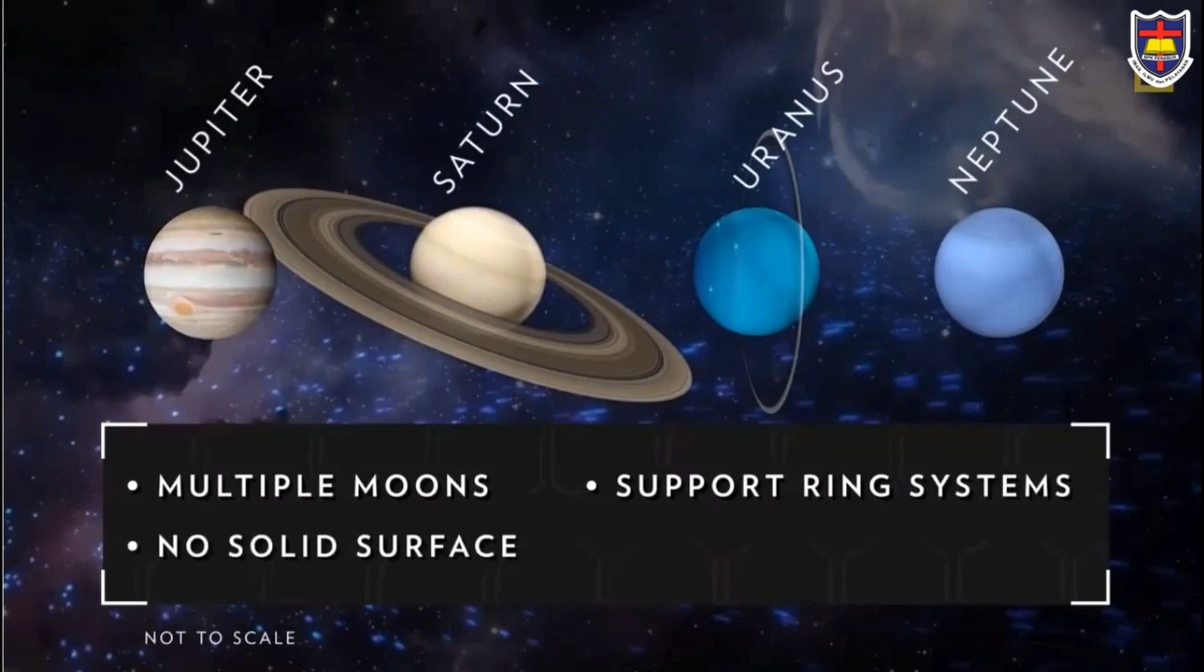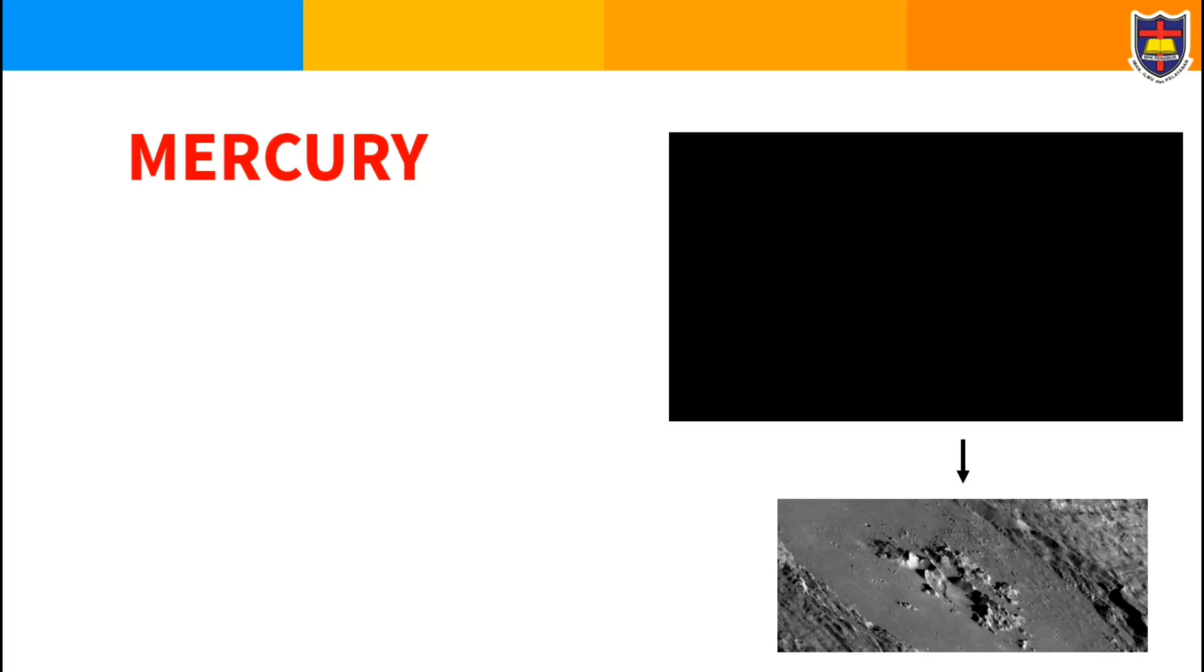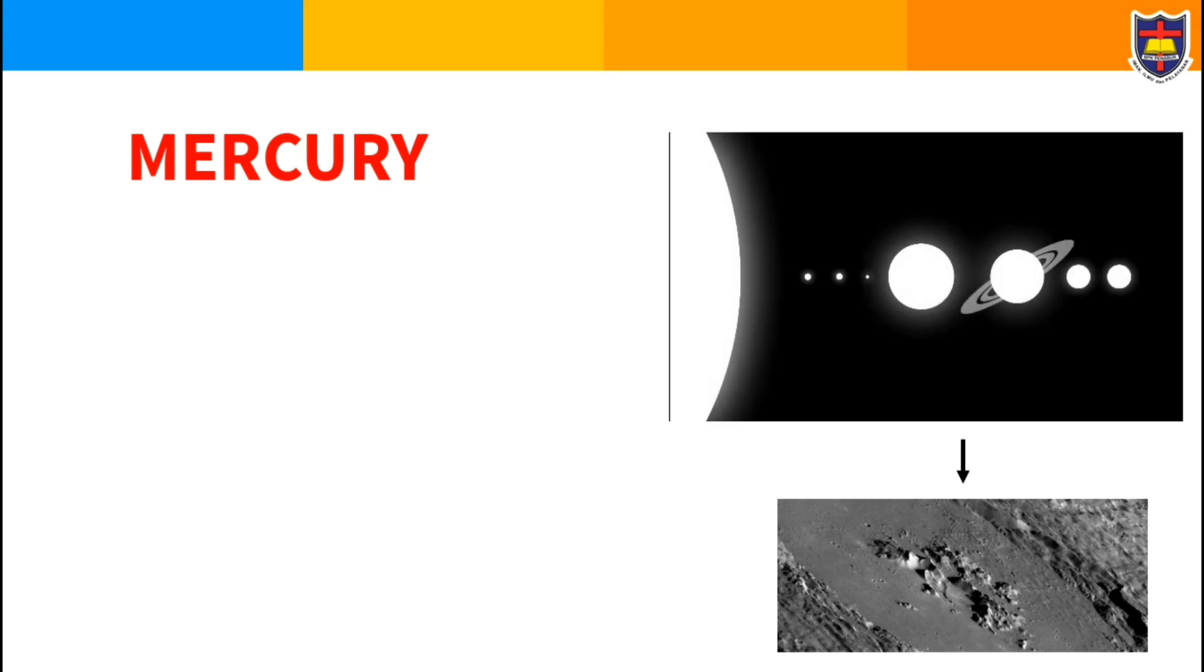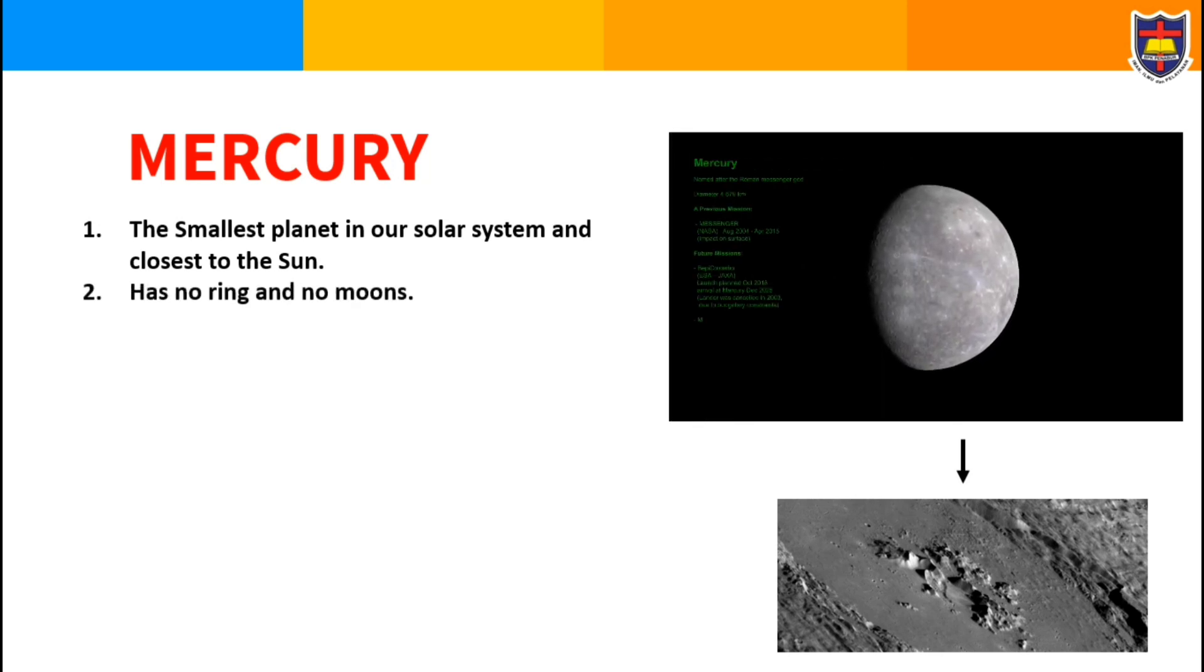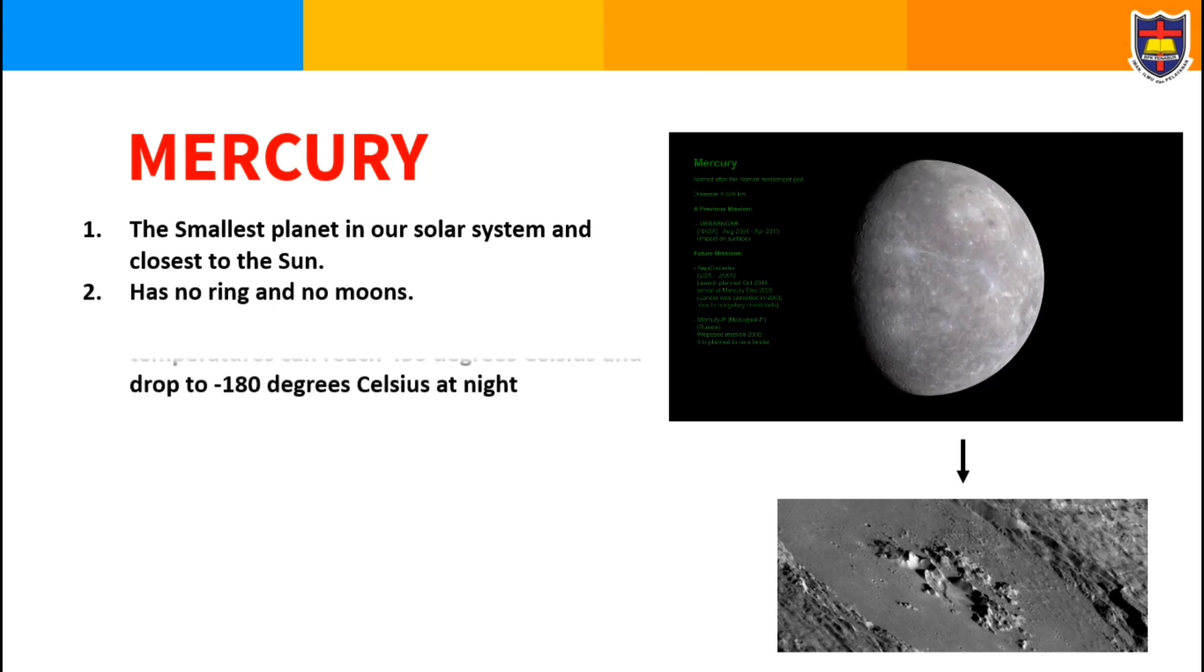Okay, let's talk about the eight planets in our solar system. The first planet is Mercury. Mercury is the smallest planet in our solar system and the closest to the Sun. There are no rings around Mercury. Mercury has no moons.